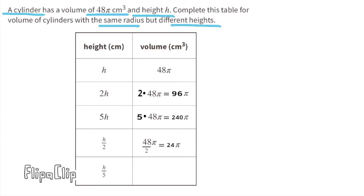The height of the last cylinder is h over 5, or height divided by 5 — that height is 5 times shorter than the original. So the volume is going to be 5 times smaller than the original volume: 48π divided by 5. Since 48π divided by 5 gives us a mixed number, we can leave it as 48π over 5. So when the height is h over 5, the volume is 48π over 5 centimeters cubed.